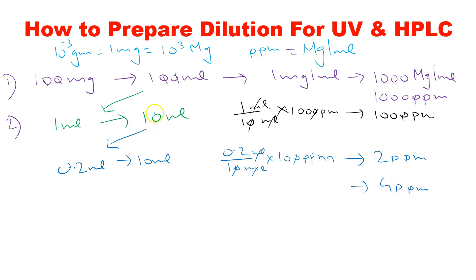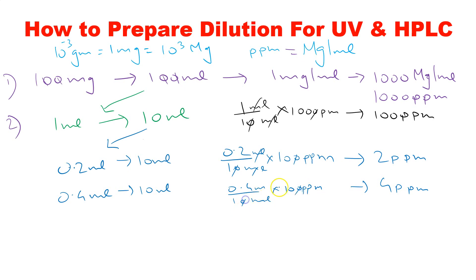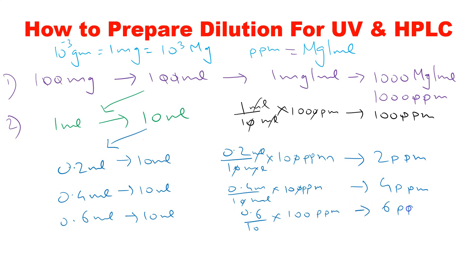Similarly for a 4 ppm solution: take 0.4 mL from Stock 2 and dissolve in 10 mL. The concentration becomes 4 ppm. For 6 ppm: take 0.6 mL and dissolve in 10 mL. The concentration from the 100 ppm Stock 2 becomes 6 ppm.